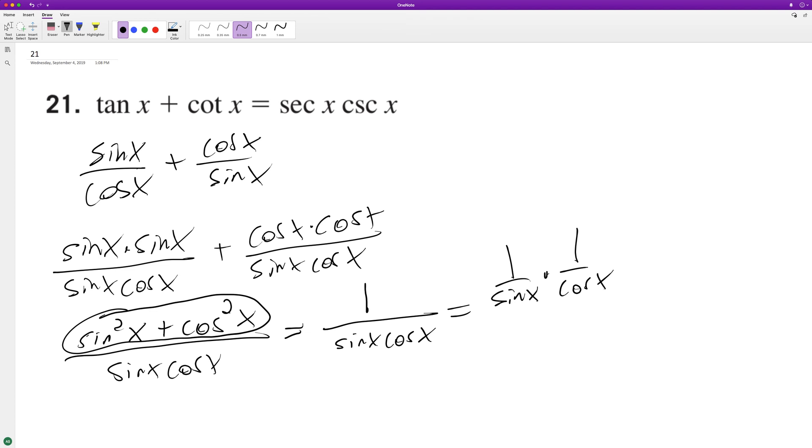Because one over sine of X is equal to cosecant of X, and one over cosine is equal to secant of X, or rearranging it, so it's secant of X times cosecant of X. And that's what proves our identity.